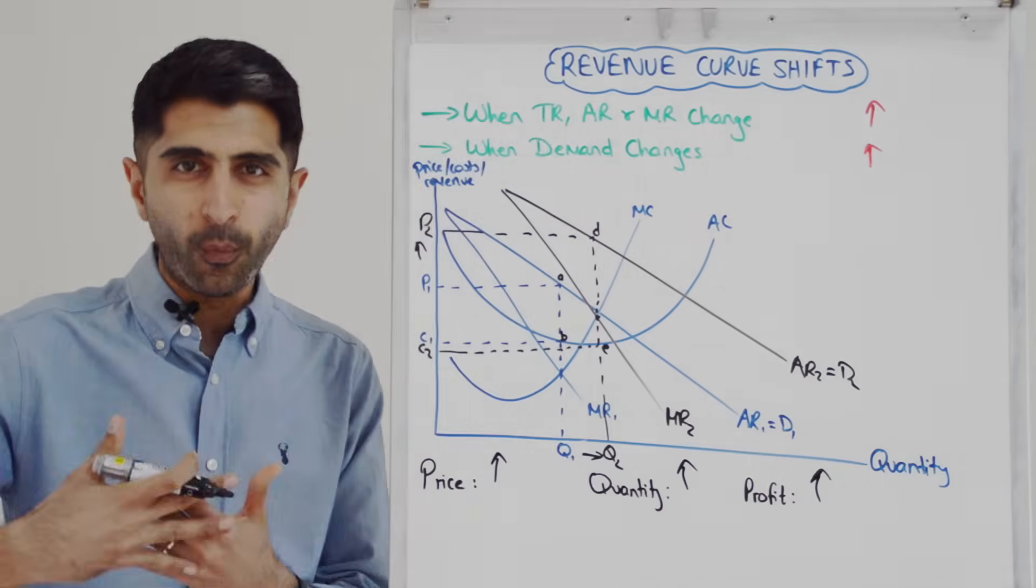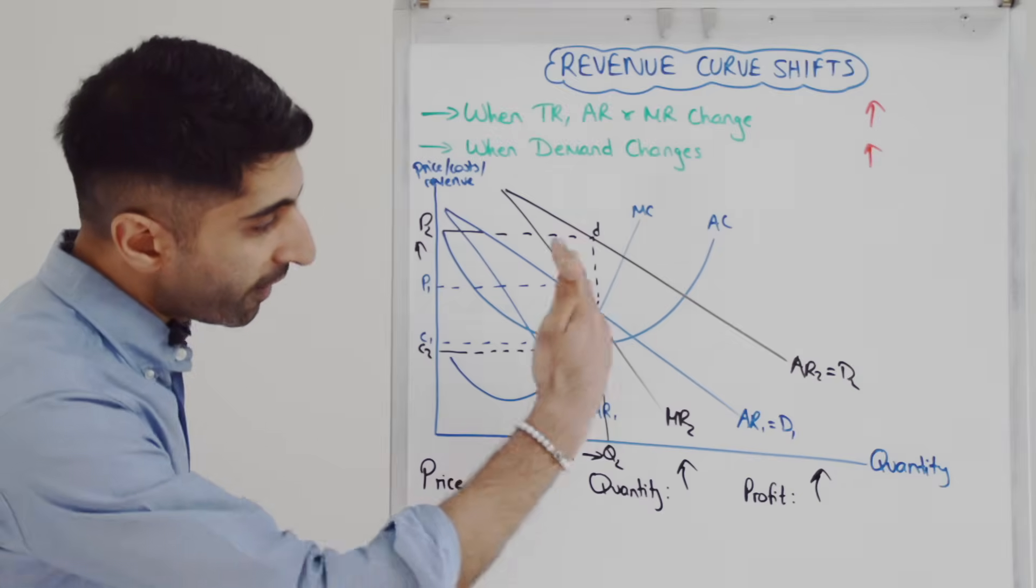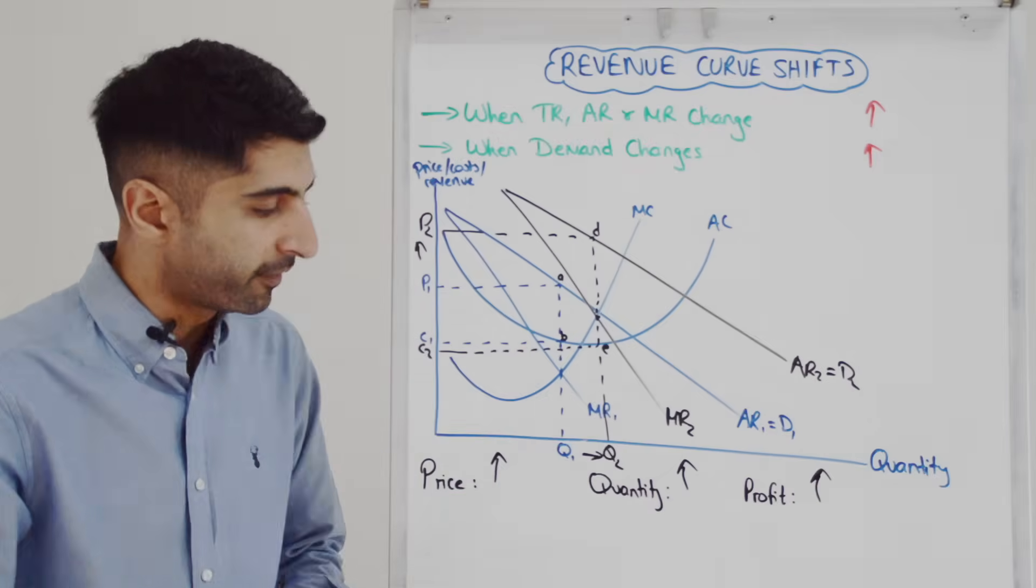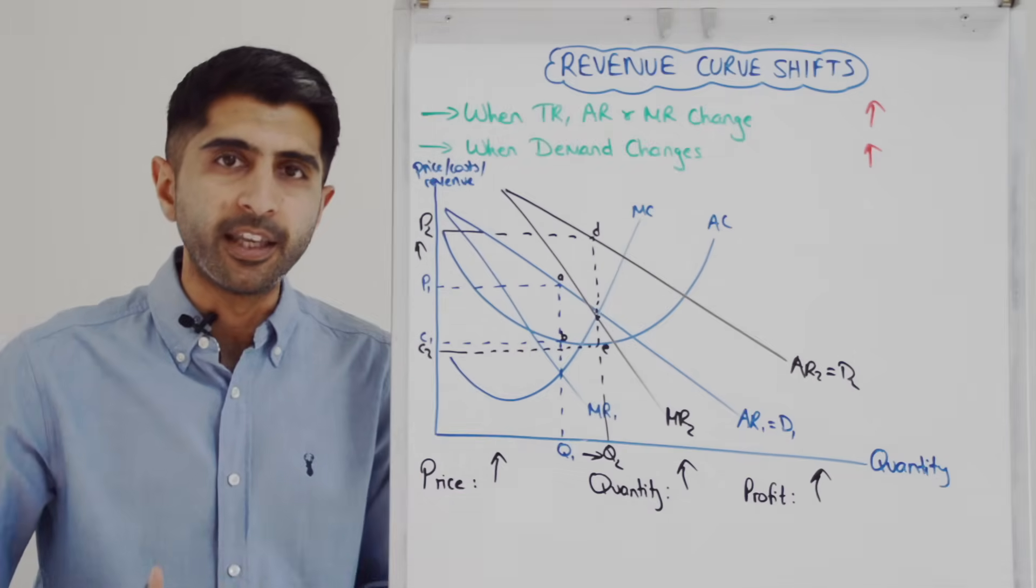Just like you'd expect to see when demand shifts to the right. If revenue reduces and demand shifts left, so AR and MR shift left, it's going to be the opposite impact. Price will fall, quantity will fall, and profit will decrease.